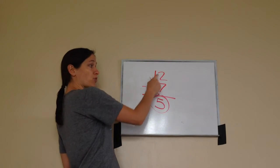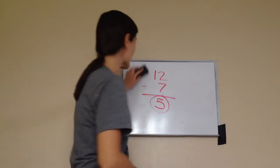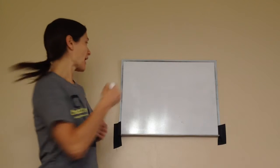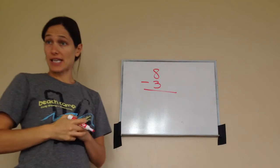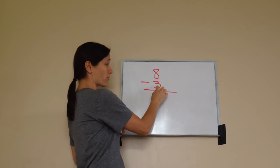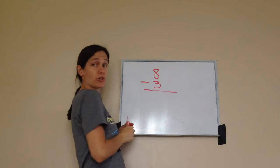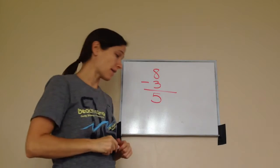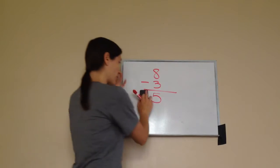If the answer to a subtraction problem is called the difference, what is the difference between 12 minus seven? Five — very good, excellent job. Now here's another way to say it: what is eight minus three? You can count up with your fingers from three to eight — three, four, five, six, seven, eight — and you can see that it's five. That's our answer, and what's our answer called? The difference.